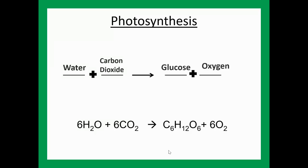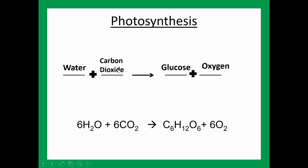The word and simple equation for photosynthesis. This is a chemical reaction — the reactants are on the left, an arrow representing the reaction, and the products on the right. Water plus carbon dioxide are the reactants; they make glucose and oxygen as a byproduct. The simple equation is: 6H₂O + 6CO₂ → C₆H₁₂O₆ + 6O₂.